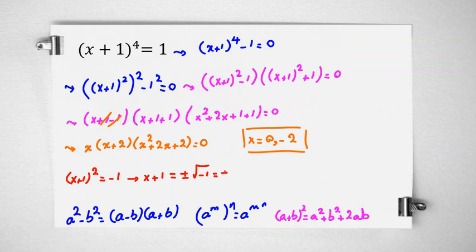In complex numbers, root negative 1 is i. So plus minus i, and if you subtract 1, it will be negative 1 plus minus i.